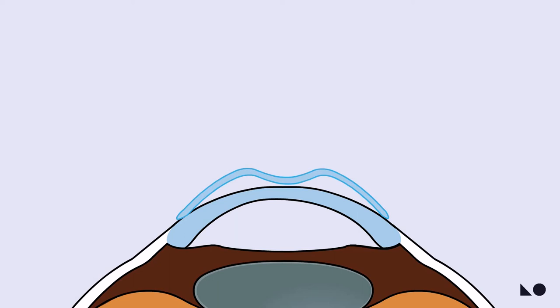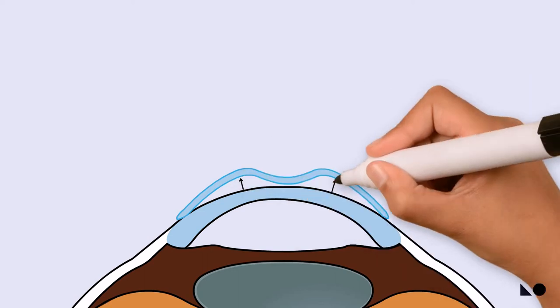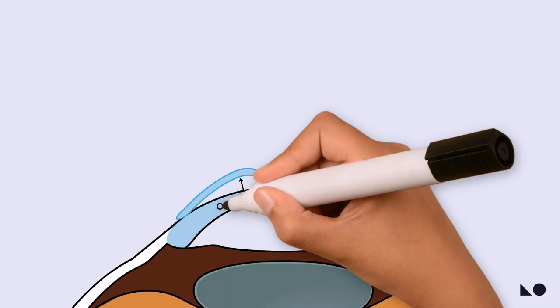Ortho-K lenses work by creating negative pressure, also known as suction, in the region under these humps. The cells then migrate and multiply in this region, ever so slightly thickening the zone. The cornea then takes on the shape of the ortho-K retainer lens.